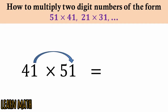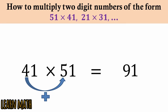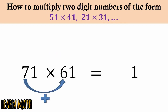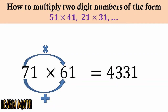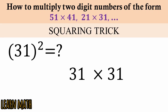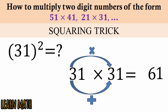For 41 multiplied by 51: 1 into 1 is 1, then 4 plus 5 is 9, then 4 into 5 is 20 — so 2091 is the answer. The third example is 71 multiplied by 61: 1 into 1 is 1, 7 plus 6 is 13 so write 3 and carry 1, 7 into 6 is 42 plus 1 is 43 — so 4331. We can also use this trick for squaring: 31 squared — 1 into 1 is 1, 3 plus 3 is 6, 3 into 3 is 9 — so 961.